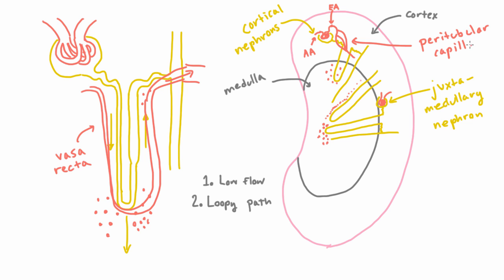And it turns out that these vasa recta are peritubular capillaries. So they are special peritubular capillaries that dive down into the medulla to feed the medulla. And what's interesting is that these vasa recta specifically come off of the efferent arteriole of juxtamedullary nephrons. So they would come off of here, dive down, and come back up. And since they're capillary, we should probably draw it as a capillary bed rather than just one vessel. And so they're coming off of the efferent arteriole of a juxtamedullary nephron. And that makes sense because the juxtamedullary nephrons are closer to the medulla, which is where we want our vasa recta to go.